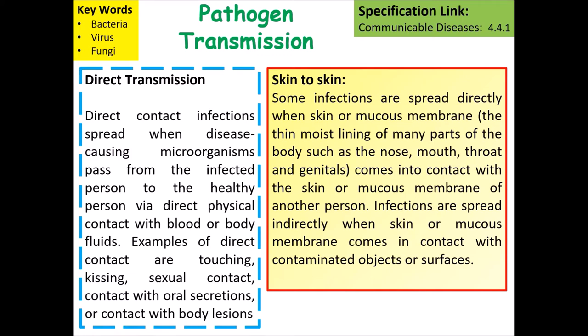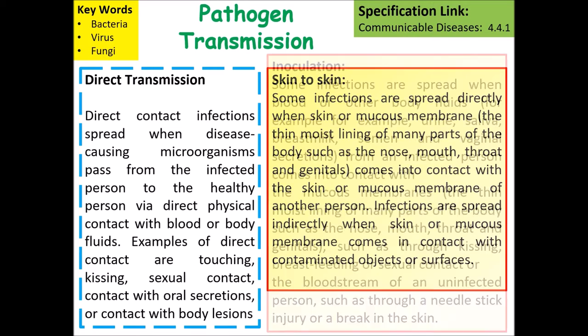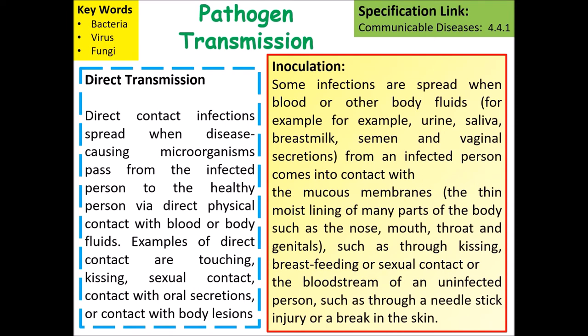Infections spread indirectly when skin or mucous membranes come into contact with contaminated objects. Inoculation occurs when blood or other bodily fluids such as urine, saliva, breast milk or seminal fluid from an infected person contacts the mucous membrane of a non-infected person. This is commonly linked to sexually transmitted diseases or diseases spread through sharing needles.